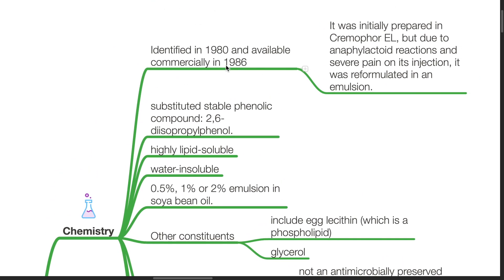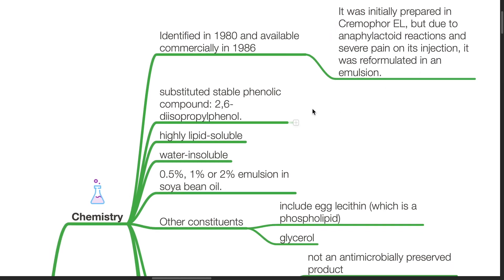Propofol was identified in 1980 and became available commercially in 1986. It was initially prepared in Cremophor EL, but due to anaphylactoid reactions and severe pain on injection, it was reformulated in an emulsion. It is a substituted stable phenolic compound known as 2,6-diisopropylphenol.